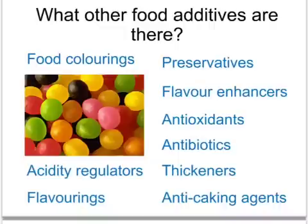The food industry uses many other additives. Additives might include food colourings, for example in sweets. Preservatives stop food from going off or stop microbes from growing in the food. Flavour enhancers give a slight tang to the food. Antioxidants stop oxygen from reacting with the food and making it go off, particularly fats and oils in the food which react with oxygen in the air and go rancid.